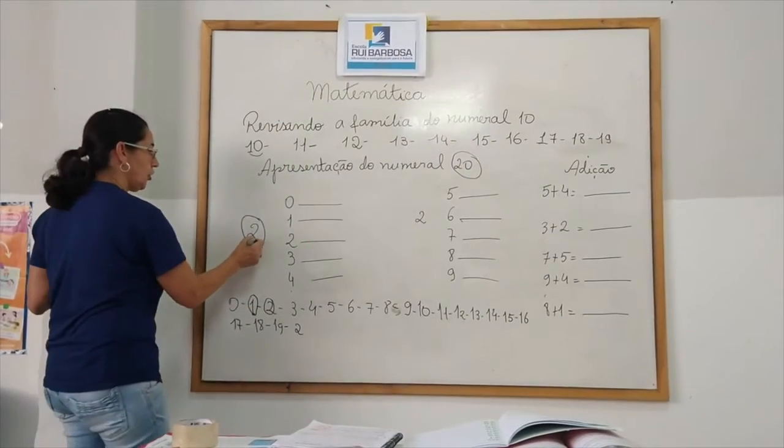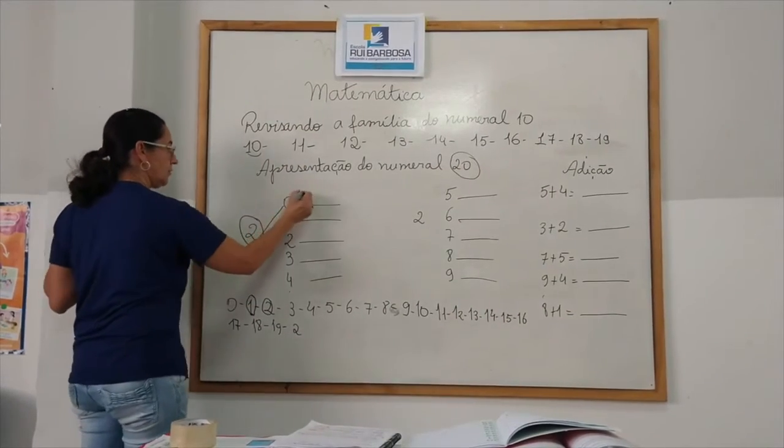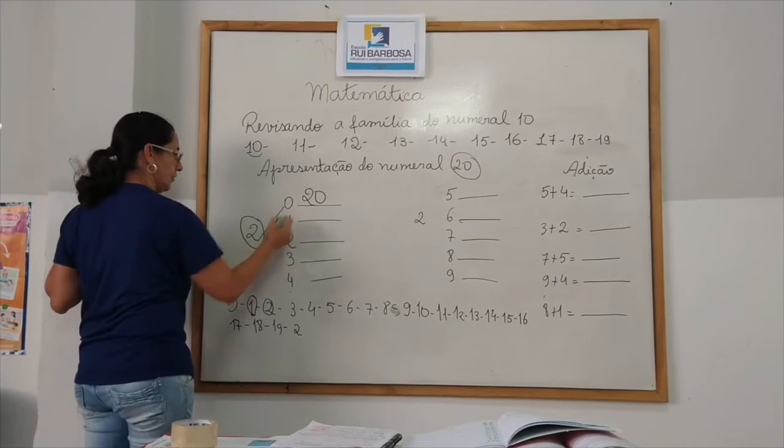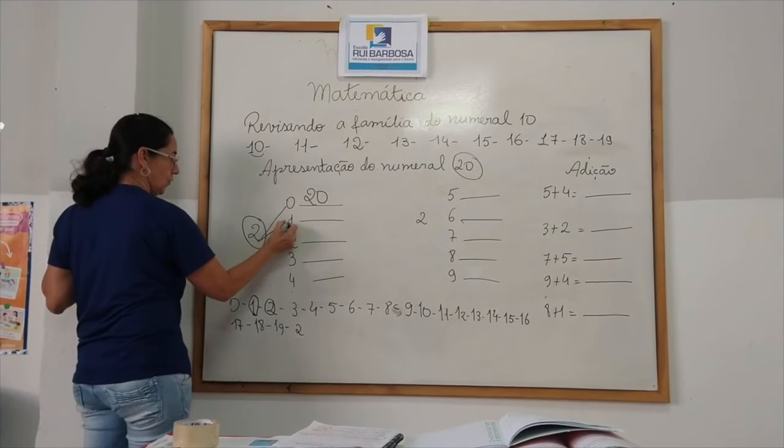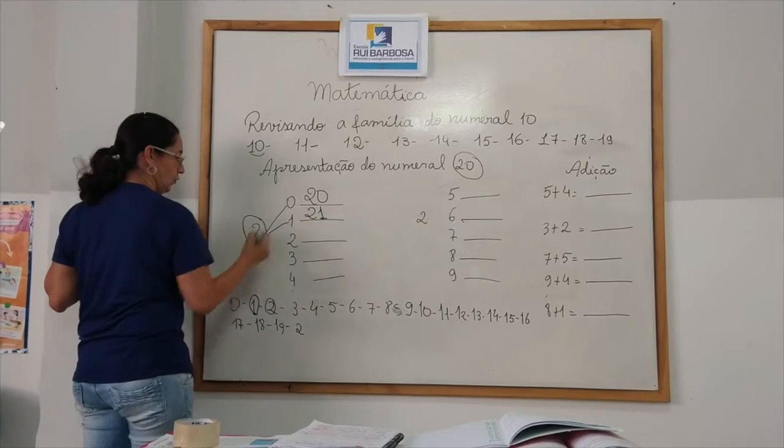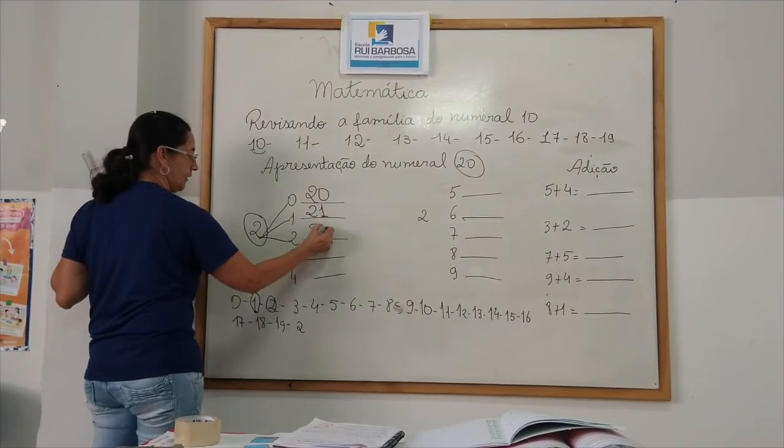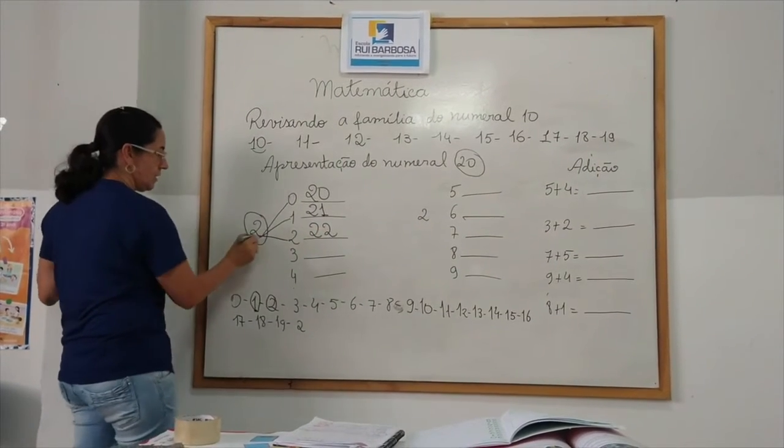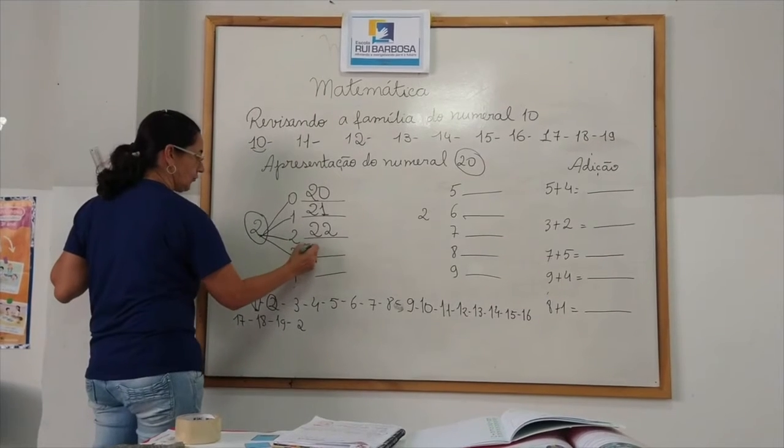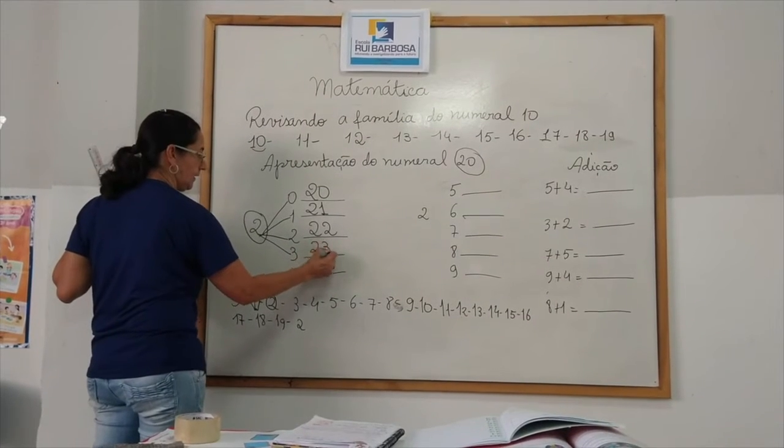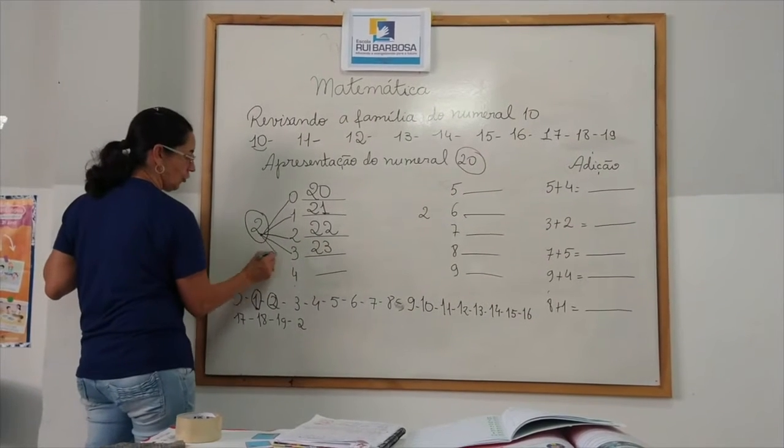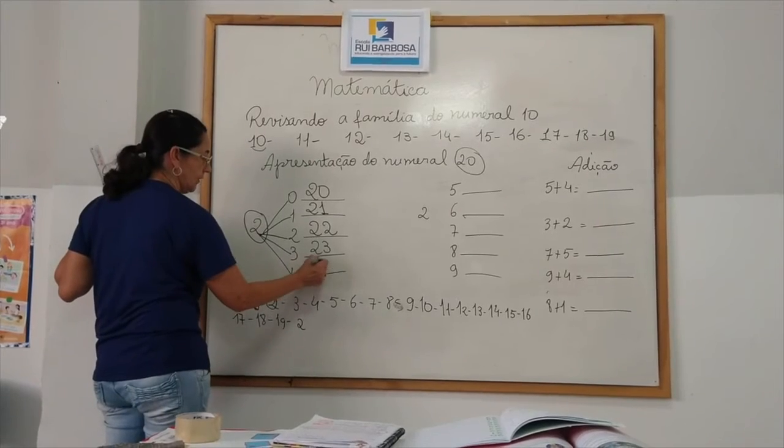Vamos lá. Dois, juntou com 0, 20. 2, 1, 20 e 1. Dois, juntou com 2, 20 e 2. Dois, juntou com 3, 20 e 3. Dois, juntou com 4, 24.